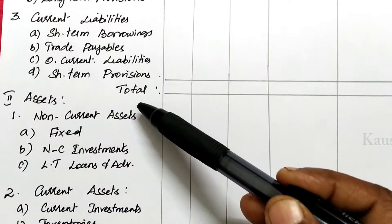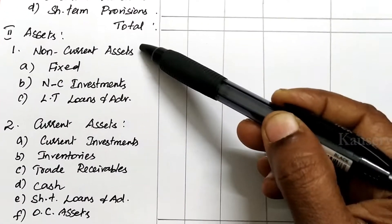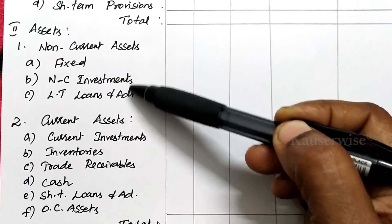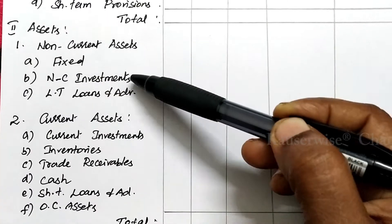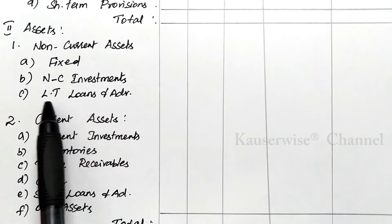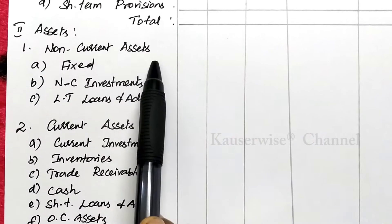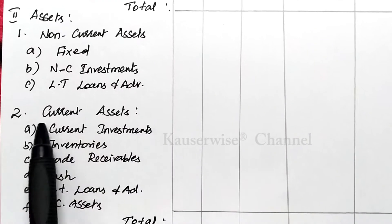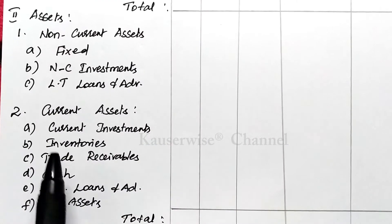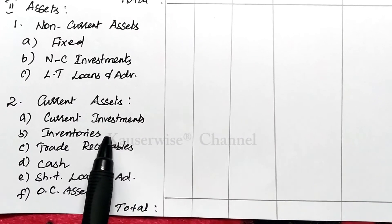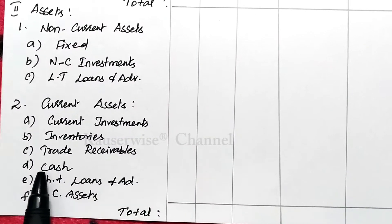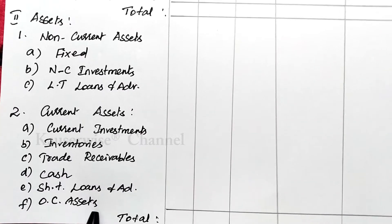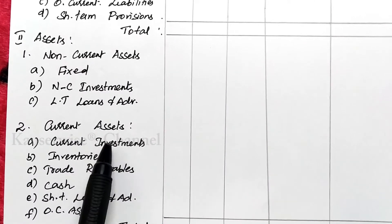The second part is assets. Under assets there are two major components: non-current assets and current assets. Under non-current assets there are three elements: fixed assets, non-current investments, and long-term loans and advances. Under current assets the elements are: current investments, inventories, trade receivables, cash, short-term loans and advances, and other current assets.